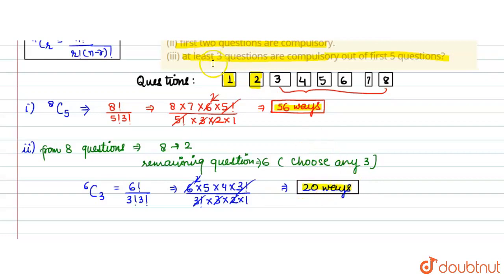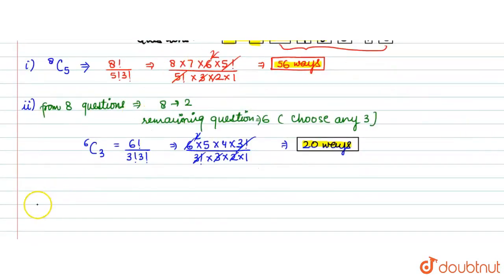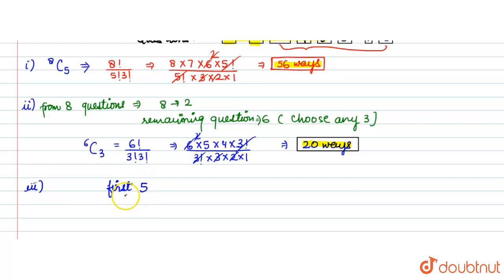Now come to the last part. At least 3 questions are compulsory out of the first 5. This means from the first 5 questions, at least 3 must be attempted. Since the student has to attempt 5 total, the remaining questions come from the last 3 questions (questions 6, 7, 8). We now solve the third part.